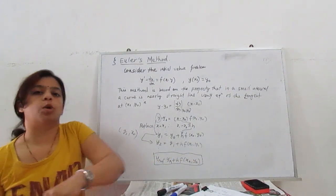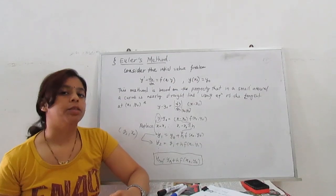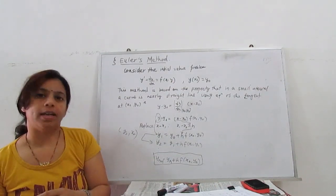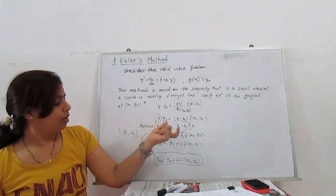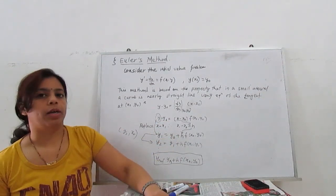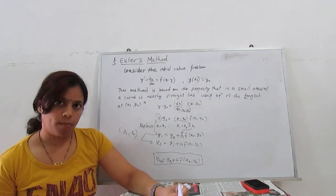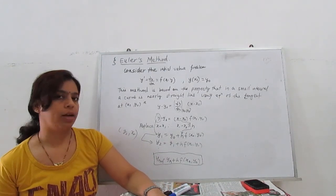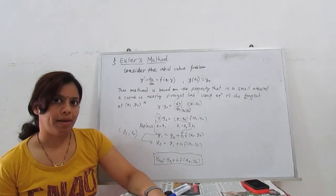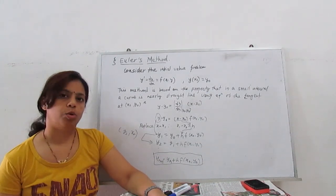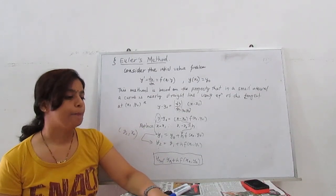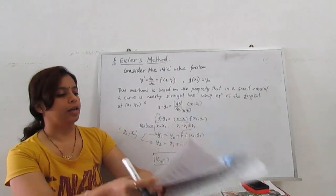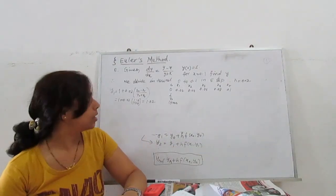This method is slow because we have to calculate at each point. There is one more method called the Euler improved method, or Euler modified method, which we will also discuss. First, I will show you a small example of how to use the Euler method, and then we will go to the Euler improved method.